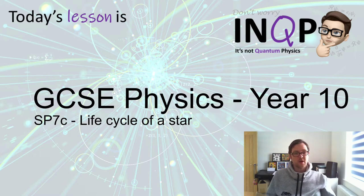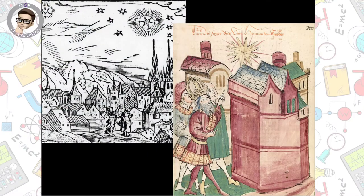Welcome back to my physics channel. Today we're going to look at the life cycle of a star. We're going to start with some pictures from around the 14th, 15th, maybe 16th century. In both pictures we can see that astronomers at the time had found something new. The moon and sun are out, and these astronomers are pointing out that there are two stars bright enough to still be seen in the daytime sky.